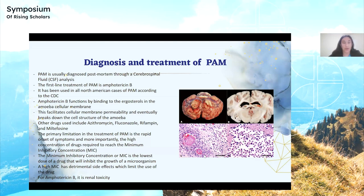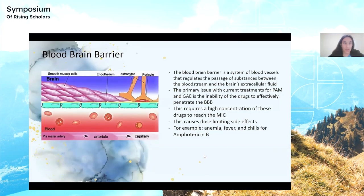An MIC is the lowest dose of a drug which will inhibit the growth of a microorganism. A high MIC is detrimental because it has dose-limiting side effects, such as renal toxicity, nausea, headaches, and chills, in the case of amphotericin B.